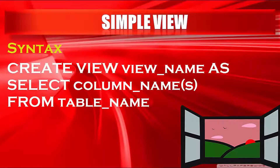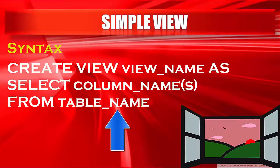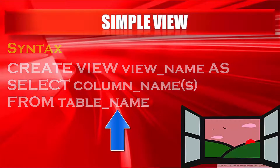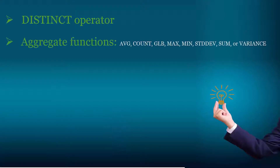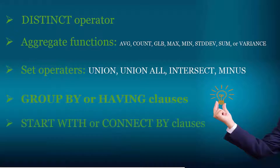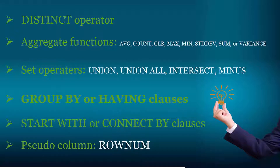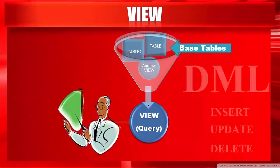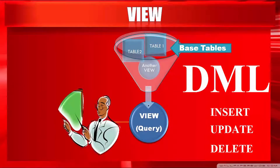Without wasting your time, let's begin with simple view. A simple view must be created on a single table only. Remember it should not contain the DISTINCT operator, aggregate functions, set operators, GROUP BY or HAVING clause, START WITH or CONNECT BY clause, or pseudocolumns like ROWNUM. If you create a view on a single table without these functions and keywords, you can perform DML operations on the view. In other words, using a simple view you can perform DML operations on the base tables.